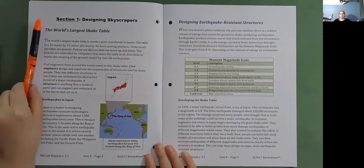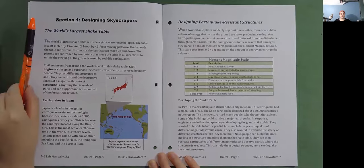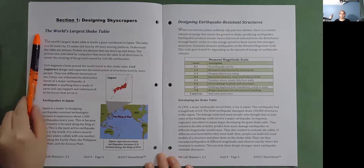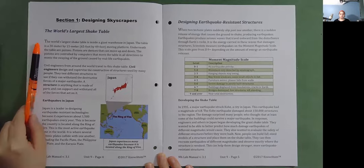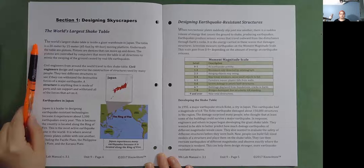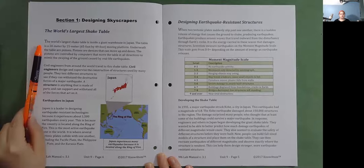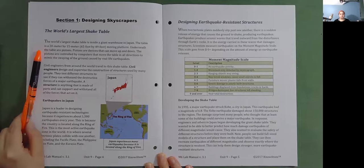Section 1, Designing Skyscrapers. The World's Largest Shake Table. The world's largest shake table is inside a giant warehouse in Japan. The table is a 20 meter by 15 meter, or 65 foot by 49 foot moving platform.